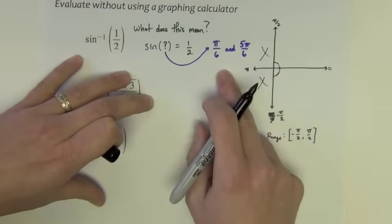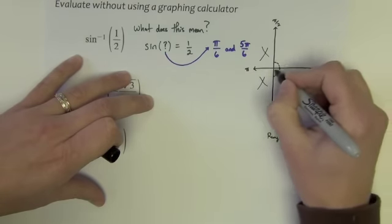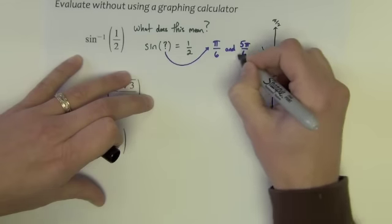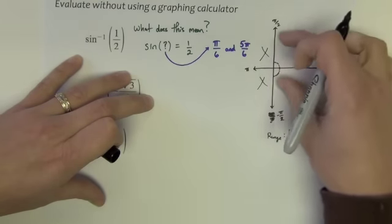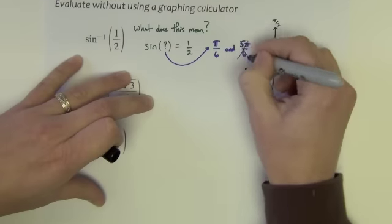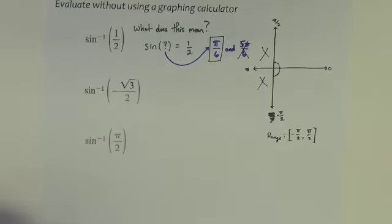Well, pi over 6 would plot here. 5 pi over 6 plots out over here in quadrant 2. 5 pi over 6 is not on this side of the graph. Therefore, 5 pi over 6 is out and the answer is just pi over 6.